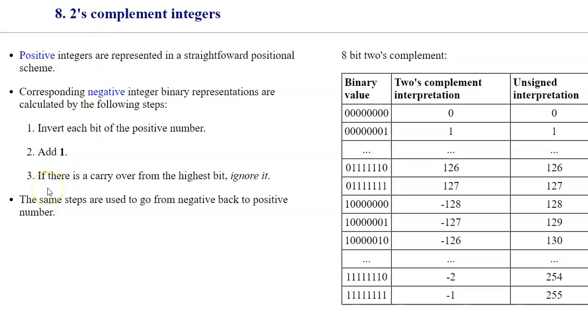And step number three, if there's a carryover from the highest bit, ignore it. This is used really only when you're converting zero to a negative zero or negative zero to a positive zero. This rule allows us to ignore any carryovers from all ones when we add one, and therefore it remains zero. This is a nice feature of two's complement that there is only one representation for zero. There's no negative or positive, just one representation of a zero.